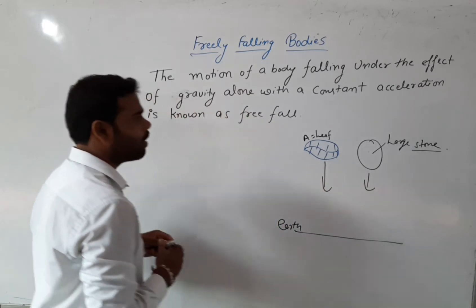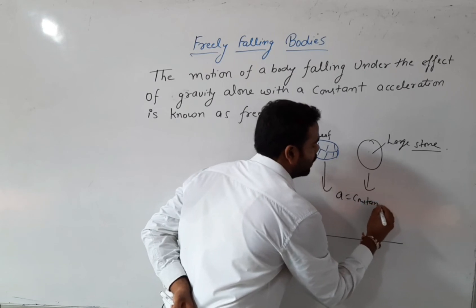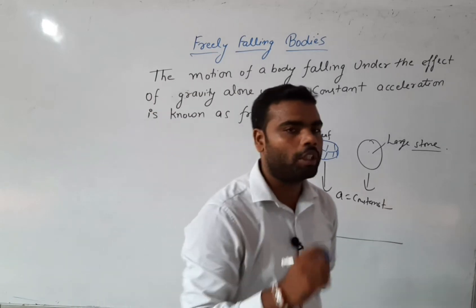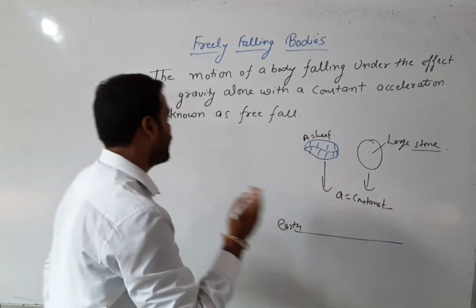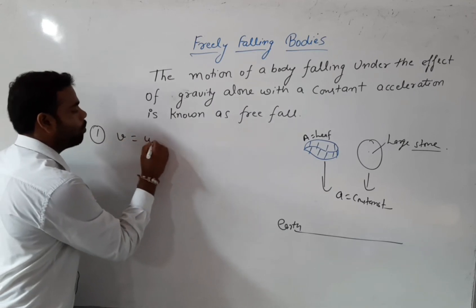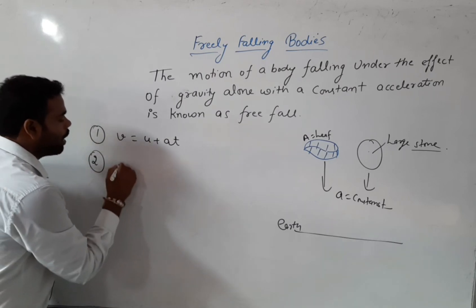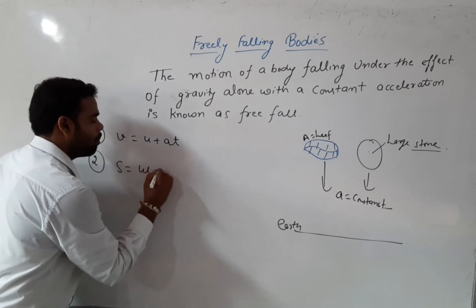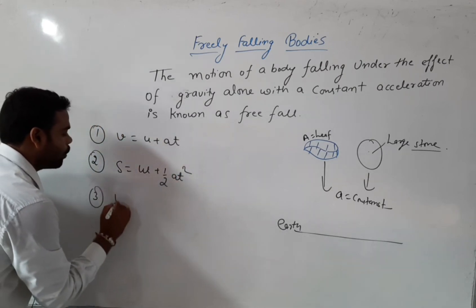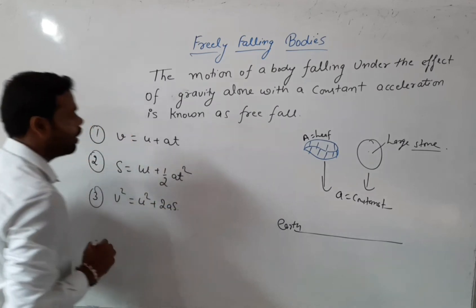This means the acceleration is constant. When a body is freely falling, we use the equations of motion. We have three equations of motion: the first is v = u + at, the second is s = ut + ½at², and the third is v² = u² + 2as.